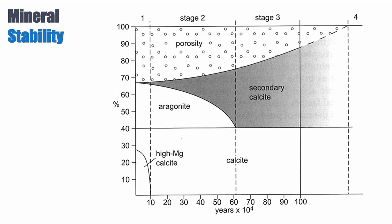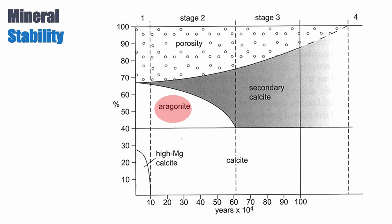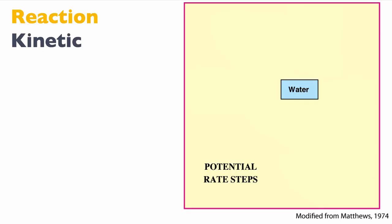If you are precipitating a secondary calcite — as can be seen on this diagram — you're filling porosity. Whereas if you're dissolving an initial component and not re-precipitating that secondary calcite, you may increase or preserve porosity. So let's understand the kinetics of dissolution and precipitation, because these two processes are not equal.